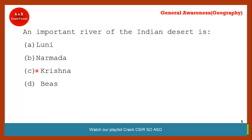An important river of the Indian desert — this river is present in the Indian desert in Rajasthan. The correct answer is Luni. Luni is an important river in the Indian desert.